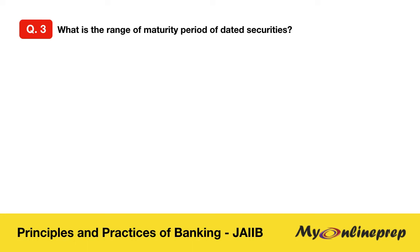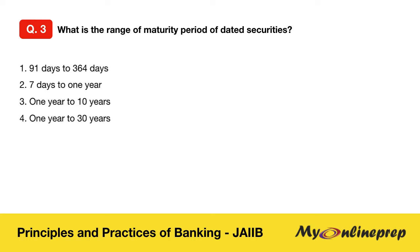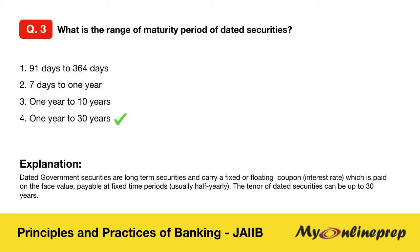Question 3: What is the range of maturity period of dated securities? Options are: 91 days to 364 days, seven days to one year, one year to 10 years, or one year to 30 years. Correct — option 4 is the right answer: one year to 30 years. Dated government securities are long-term securities carrying a fixed or floating coupon interest rate paid on the face value at fixed time periods, usually half-yearly. The tenure can be up to 30 years.